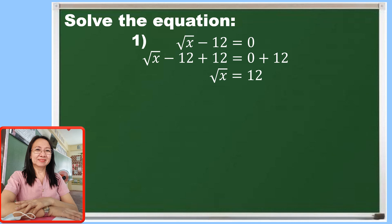Now, looking at our index which is 2, we have to raise both sides of the equation to 2. Then let us simplify. The square root of x squared is x and 12 squared is 144. So x equals 144.